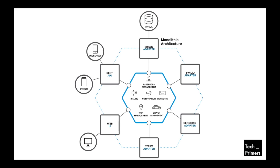SendGrid is for sending emails — if you want to automatically send emails to different mail hosts securely, you use the SendGrid API. The Twilio adapter is for sending messages, so whenever a cab is booked, you get a message — that is handled by the Twilio adapter. Finally, the MySQL adapter is used to store data in the MySQL database. This is the monolithic application architecture that Uber was running when it was initially launched.